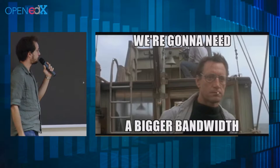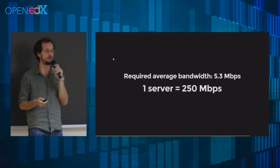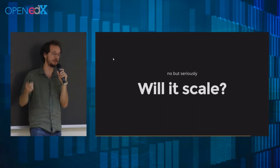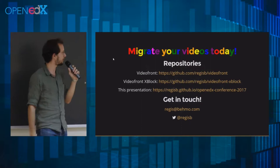You might be thinking bandwidth is going to be very expensive. Good news: the required average bandwidth is 5.3 megabits per second, and today a server comes with 250 megabits per second for free. Will it scale? VideoFront has been in production on FunMooc. It has one million users, 300 courses. VideoFront has been running for eight months, and it's been running great.